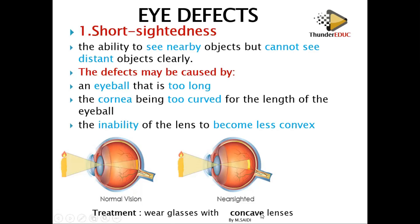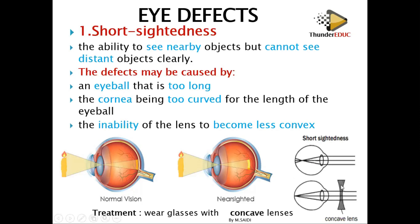You can treat this defect by wearing concave lenses. The concave lens diverges the light so that it appears to come from a nearby object. The rays are then bent so that the image is shifted onto the retina, and you'll be able to see the object. The concave lens shifts the image which was forming in front of the retina back onto the retina.